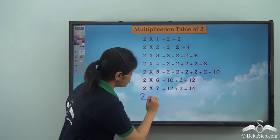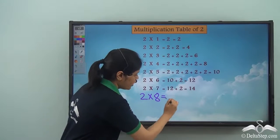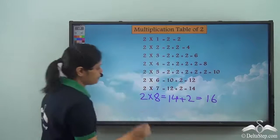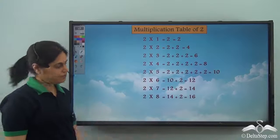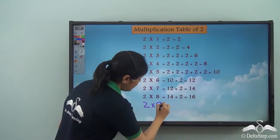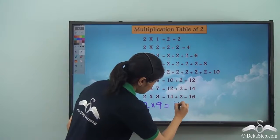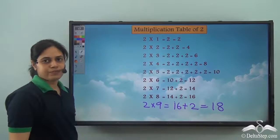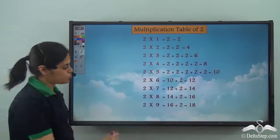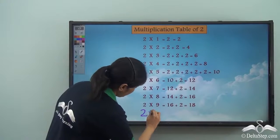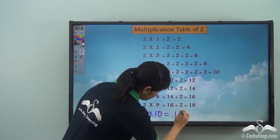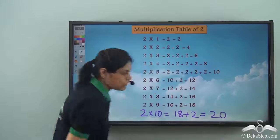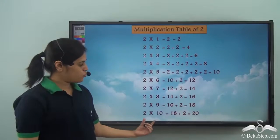Two into eight is fourteen plus two, which is sixteen. Two into nine is sixteen plus two, which is eighteen. And two into ten is eighteen plus two, which is twenty.